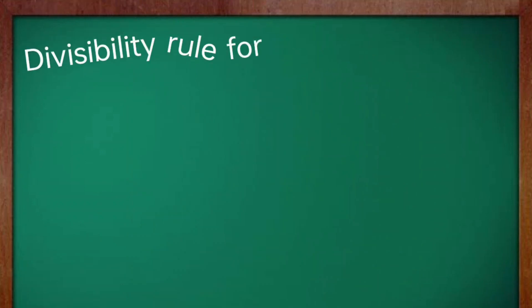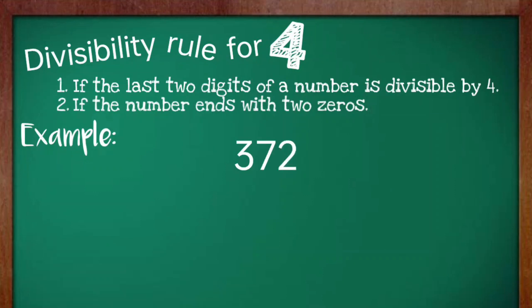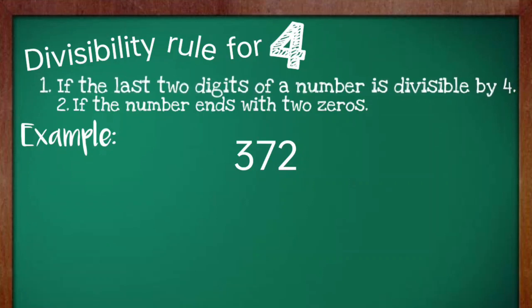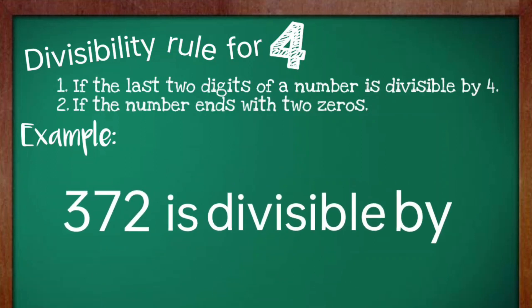Let's start with the divisibility rule for 4. First, if the last two digits of a number is divisible by 4, and if the number ends with two zeros. Example, 372. To find if this number is divisible by 4, let's apply the first rule. Let's take the last two digits and divide it by 4. 72 divided by 4 is equal to 18. Therefore, 372 is divisible by 4.